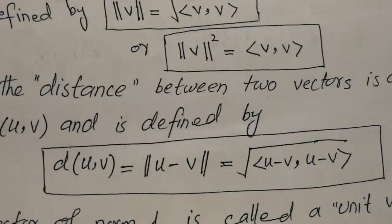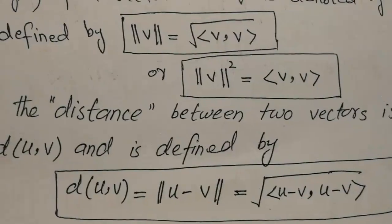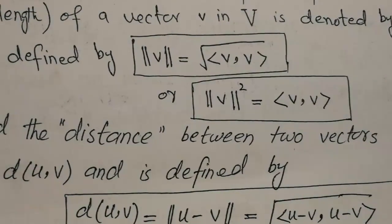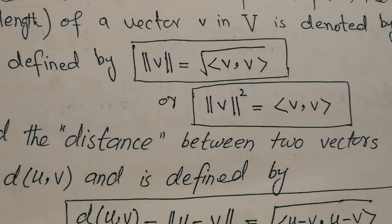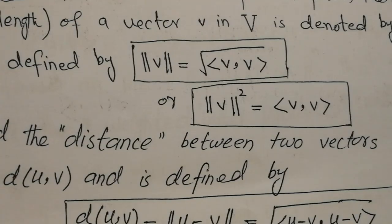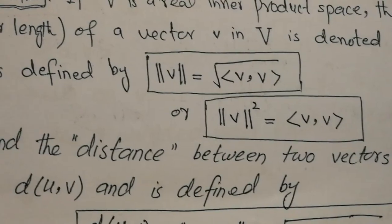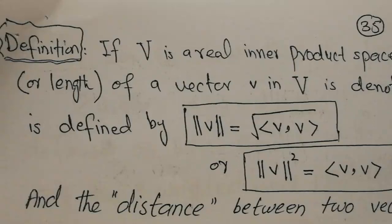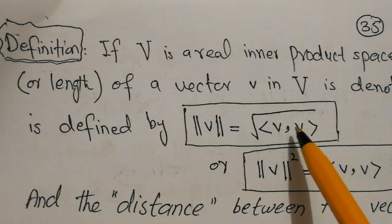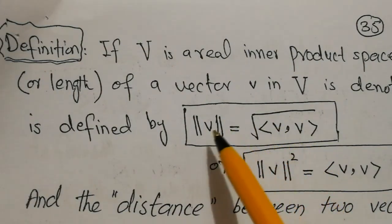Why do we study inner products? The inner product is associated with the norm of a vector, and that norm represents the length of a vector. We can then use norms to calculate the distance between two vectors, the distance between two curves, and the distance between two functions.